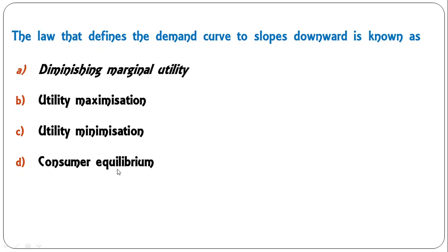Next question: 'The law that defines the demand curve to slope downward is known as' — diminishing marginal utility, utility maximization, utility minimization, or consumer equilibrium? This demand curve sloping downward is based on the law of diminishing marginal utility, so A is the correct answer.